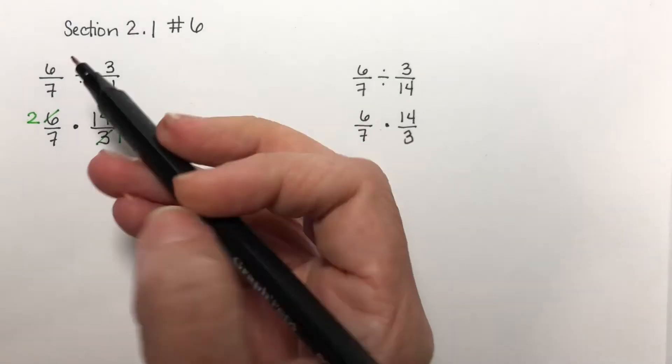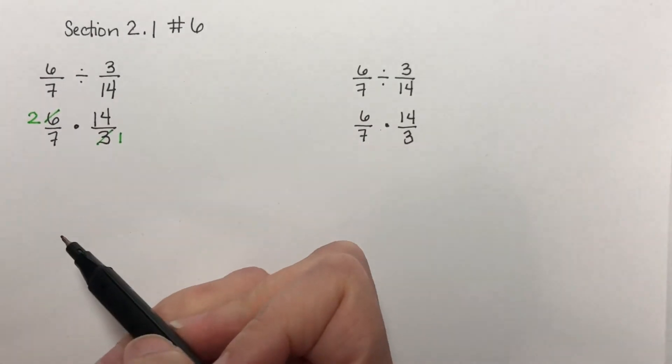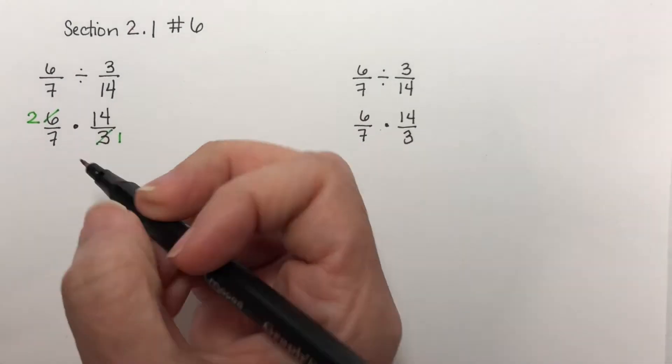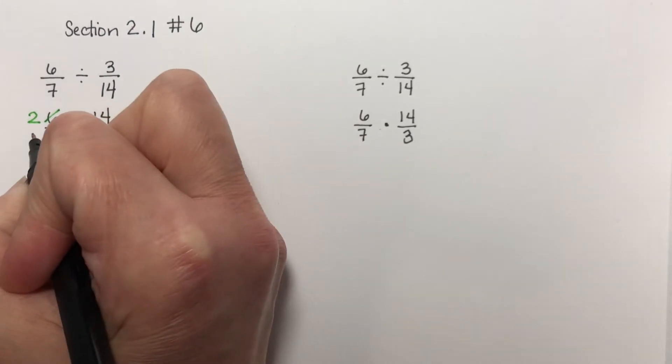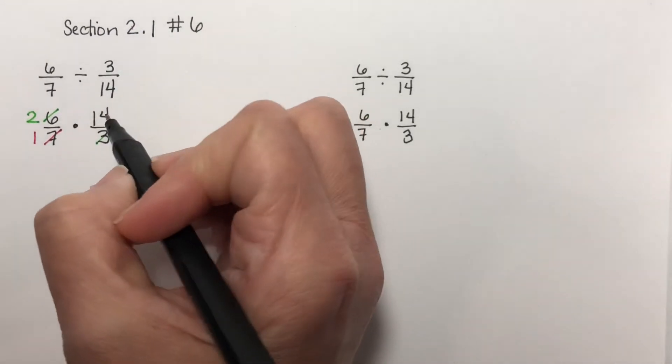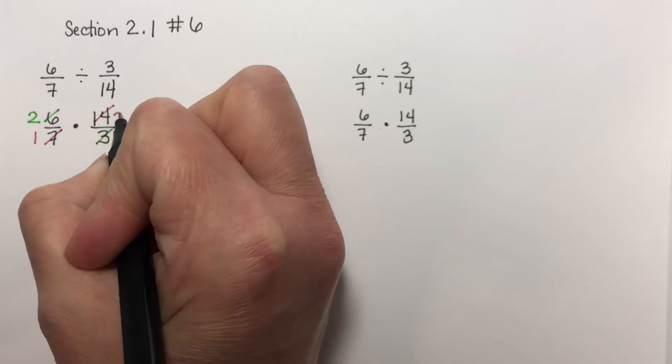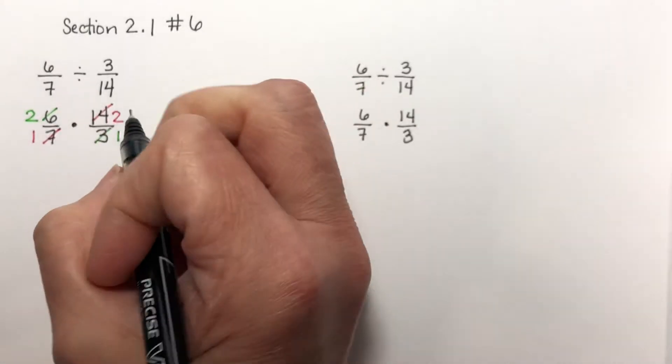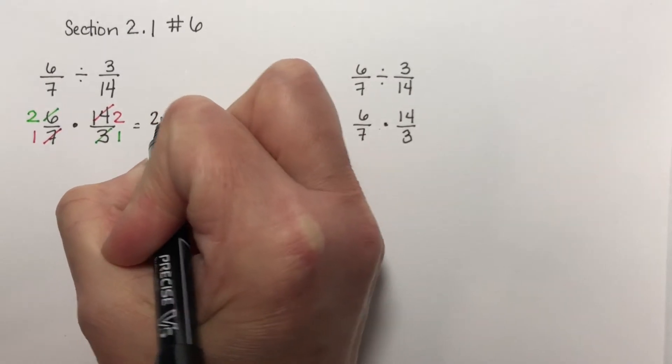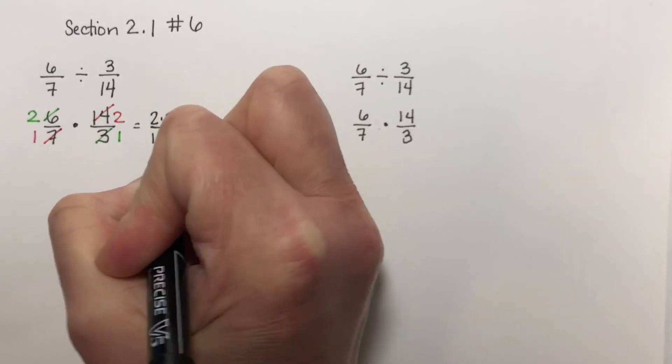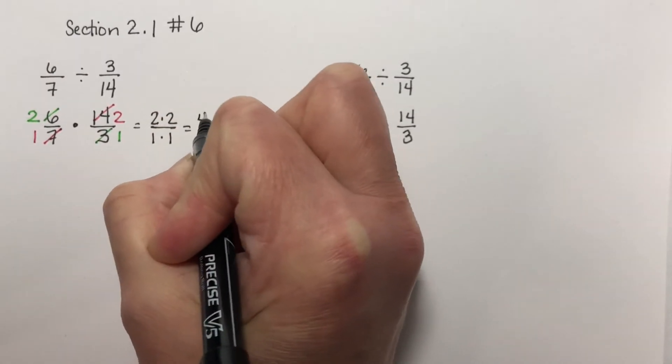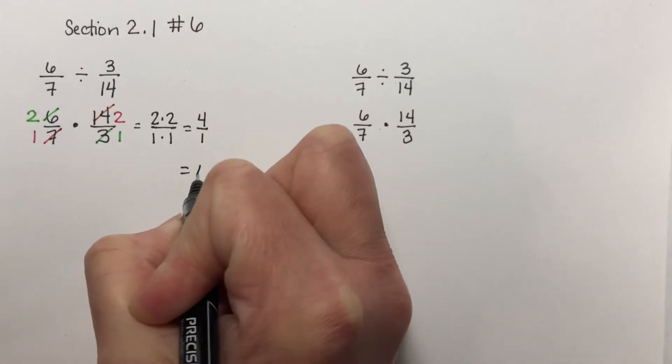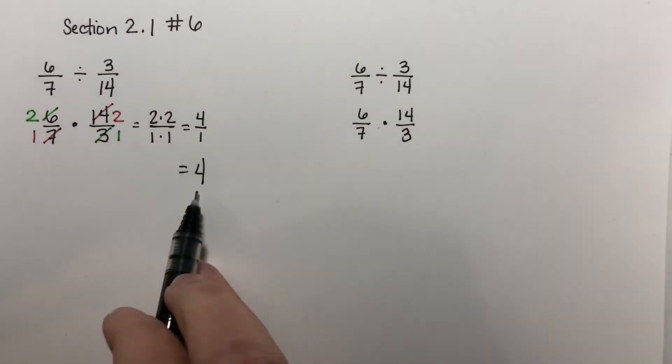Now on the other diagonal, I have a 7 and a 14. Both of these numbers are divisible by 7. If I divide this by 7, I get a 1. 14 divided by 7 is a 2. Now let's multiply straight across with what we have left. We have 2 times 2 over 1 times 1, which is 4 over 1, which is simply 4. So 4 is my answer.